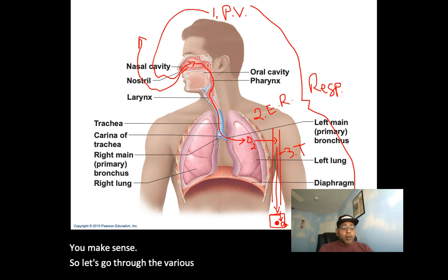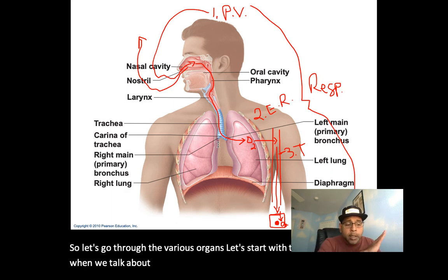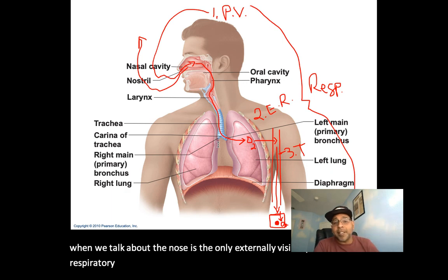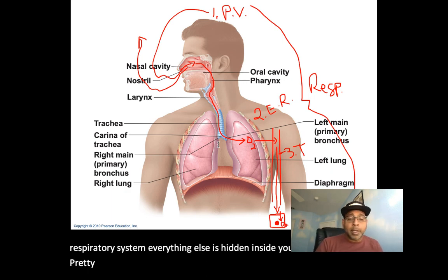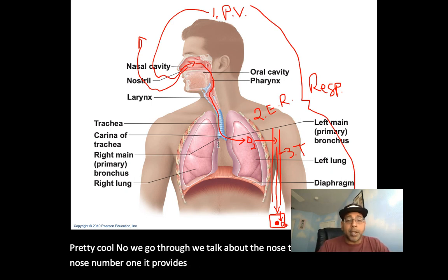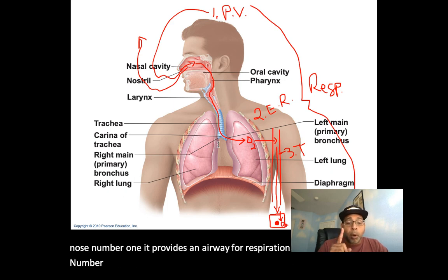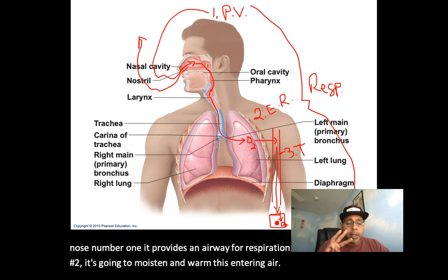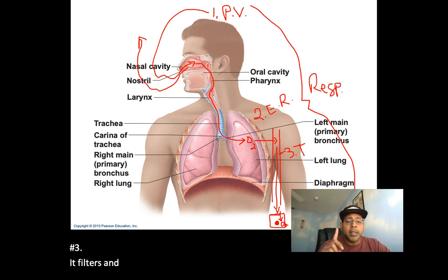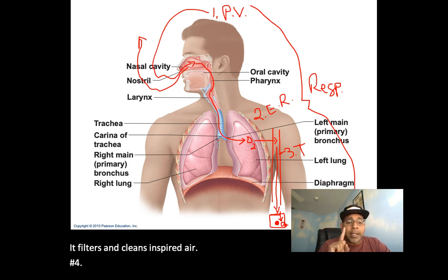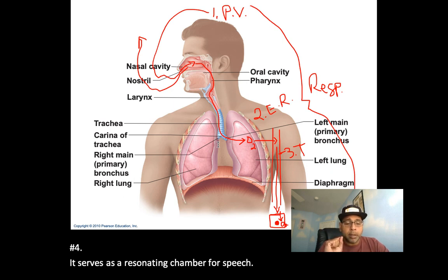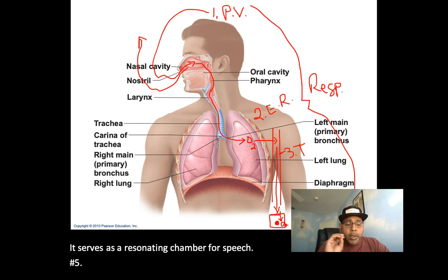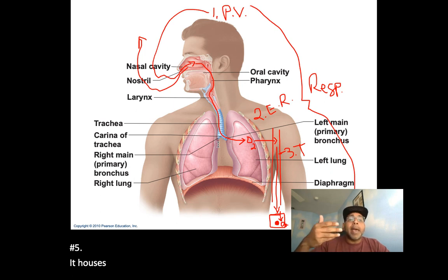Let's go through the various organs, starting with the nose. The nose is the only externally visible part of the respiratory system — everything else is hidden inside. Functions of the nose: number one, it provides an airway for respiration; number two, it moistens and warms entering air; number three, it filters and cleans inspired air; number four, it serves as a resonating chamber for speech; number five, it houses the olfactory or smell receptors.